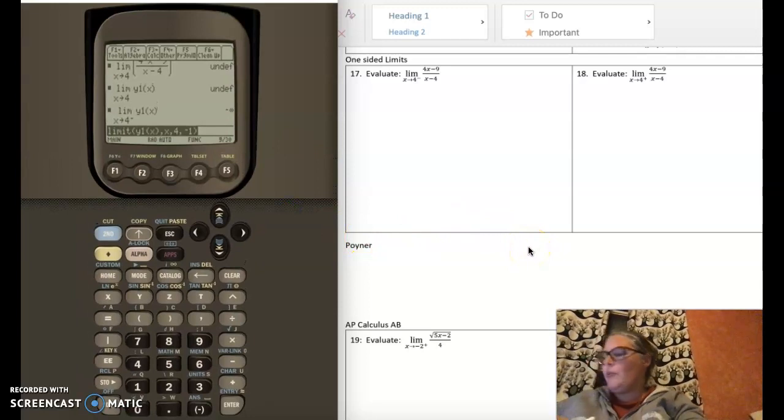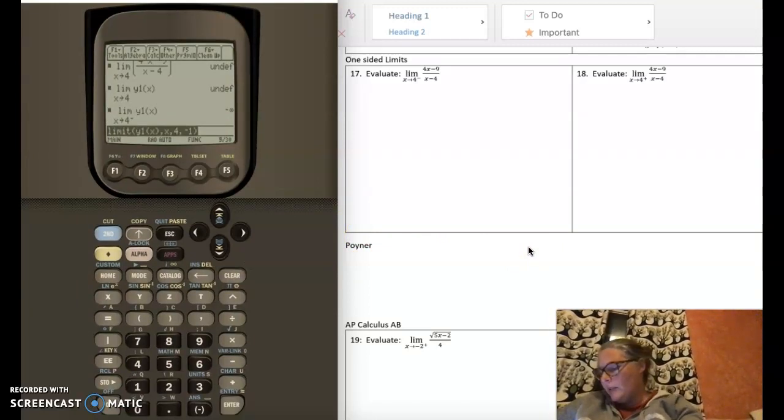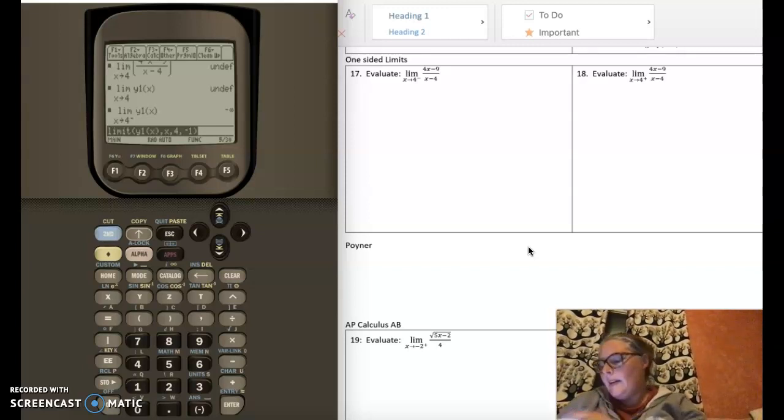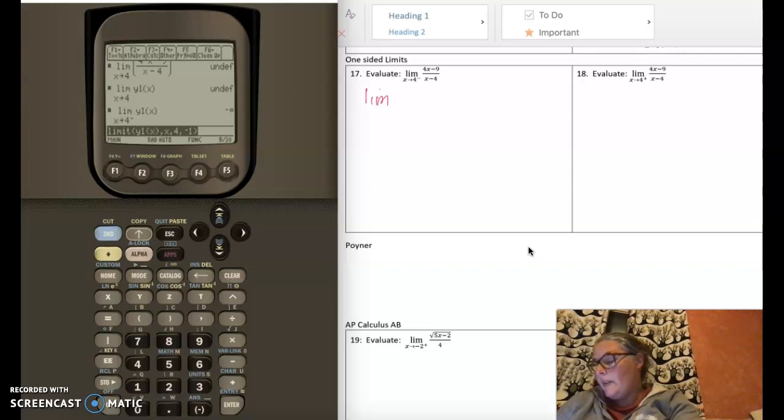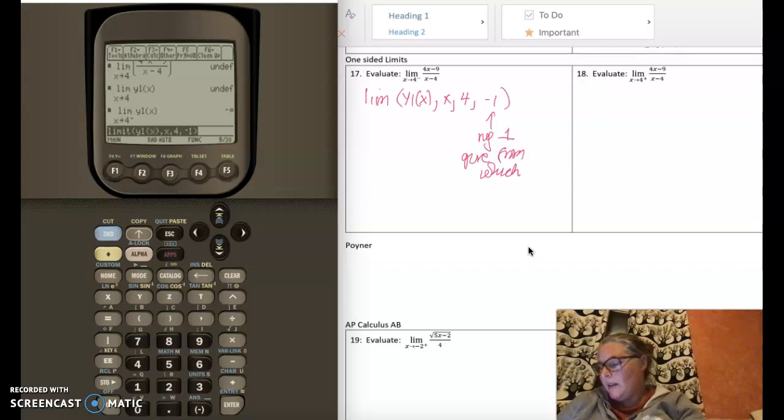So to write down the vernacular for this, let's make sure I find it. You are going to take the limit of the function you want, and we call this y1 of x, from x to 4, or as x approaches 4, but negative 1 gives from which direction? So negative 1 from left, positive 1 from right, like that.